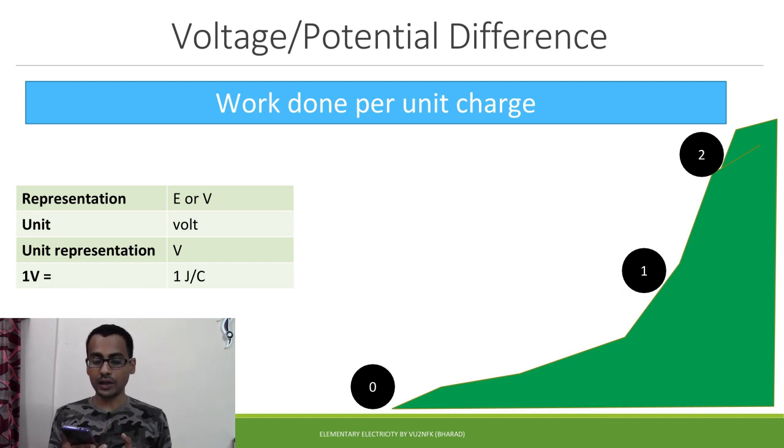So potential difference is defined as the amount of work done per unit charge. So assume that this boulder is no more a boulder but a charge and you are putting some amount of energy onto it to move that charge. So the potential difference between 0 and 1 and 1 and 2 is same. But the thing that you notice is the distance between 0 and 1 is much larger and the distance between 1 and 2 is much shorter. And this is a concept of resistance. So you have to overcome more resistance to move from 1 to 2, and that's the reason that even in the short span of distance, you have to put a large amount of work.